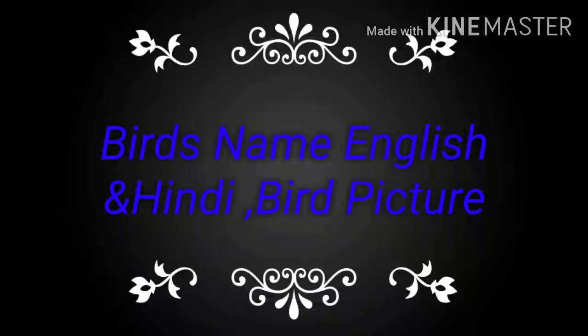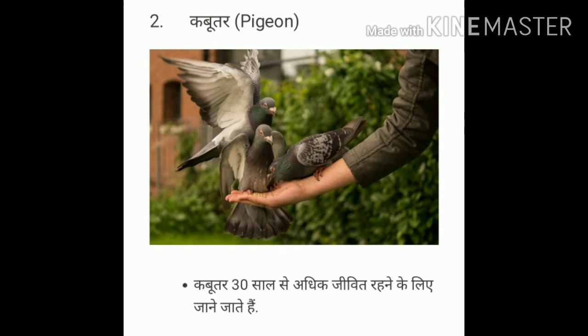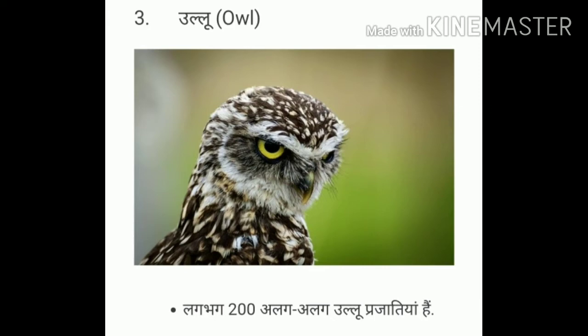Bird names in English and Hindi with bird pictures. First, Kawa — crow. Second, Kabuta — pigeon. Third, Ullu — owl.